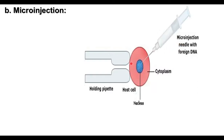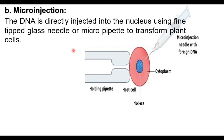The second direct method is microinjection. The cell is fixed in a position using a micropipette under suction — air is sucked so the cell is held without movement — or the cell is kept on a microscopic slide using agarose gel. After fixing the cell, DNA is injected through a micro pipette or micro syringe directly into the nucleus. This is a direct method using a fine-tipped glass needle to transform plant cells.